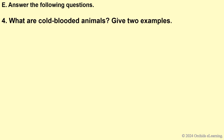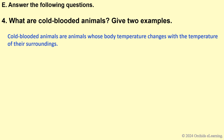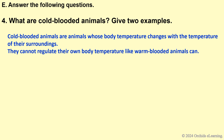What are cold-blooded animals? Give two examples. Cold-blooded animals are animals whose body temperature changes with the temperature of their surroundings. They cannot regulate their own body temperature like warm-blooded animals can. Examples: frog, snake, lizard, etc.